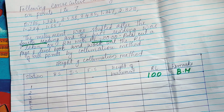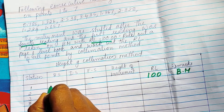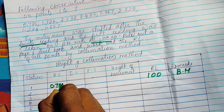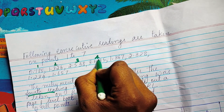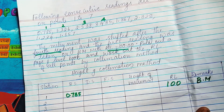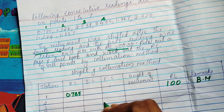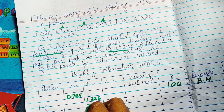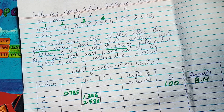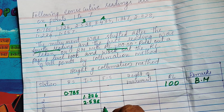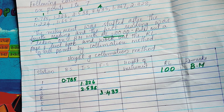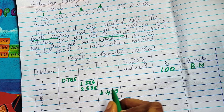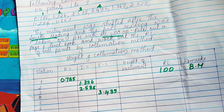The 1st point is backsight at station 1. The backsight is 0.785. Points 1, 2, 3 are intermediate sights: 1.326 and 2.538. The 4th point is the change point where the instrument is shifted, and the foresight at the 4th point is 3.435. After the shift, the new backsight at the 4th point is taken.